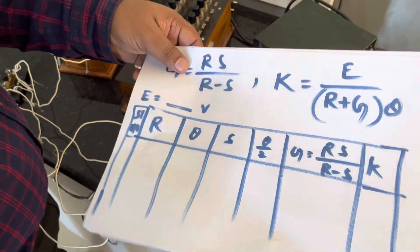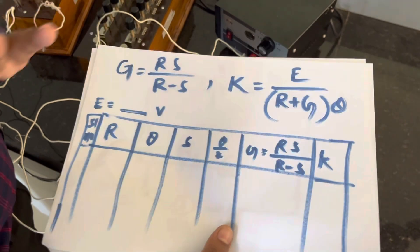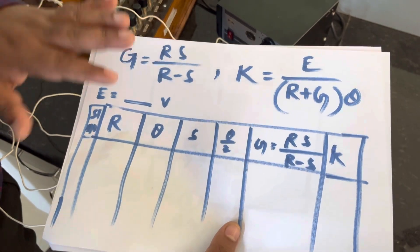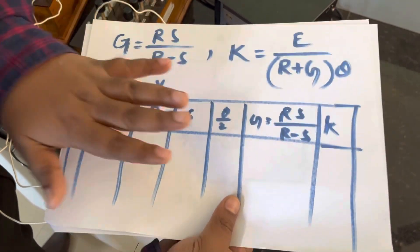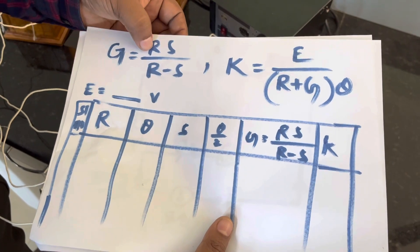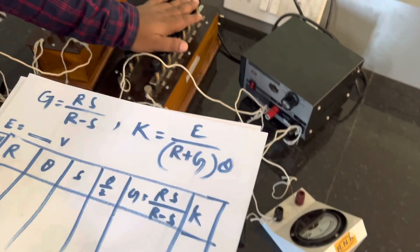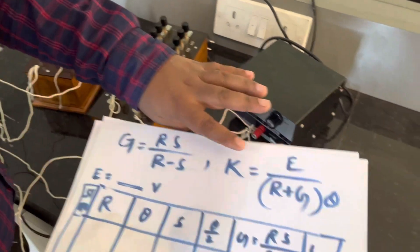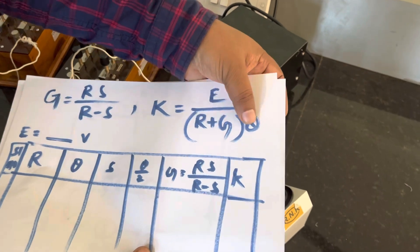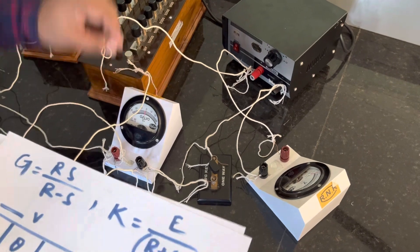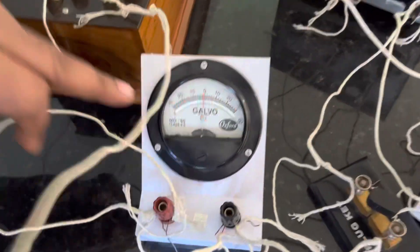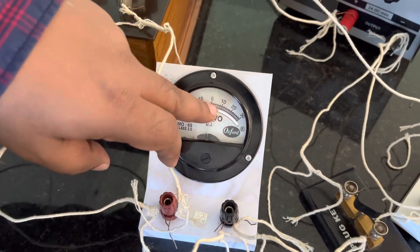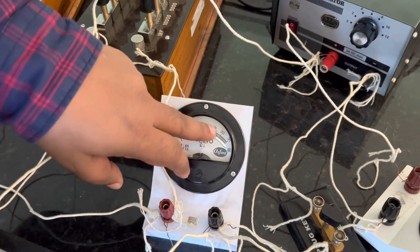Now let us look at the formulas. The galvanometer resistance formula is G = R×S / (R−S). R is the resistance from the main resistance box, S is the shunt resistance box. The figure of merit K is given by K = E / (R + G) × θ, where θ is the galvanometer deflection — the number of divisions the needle shifts from the middle when current flows.